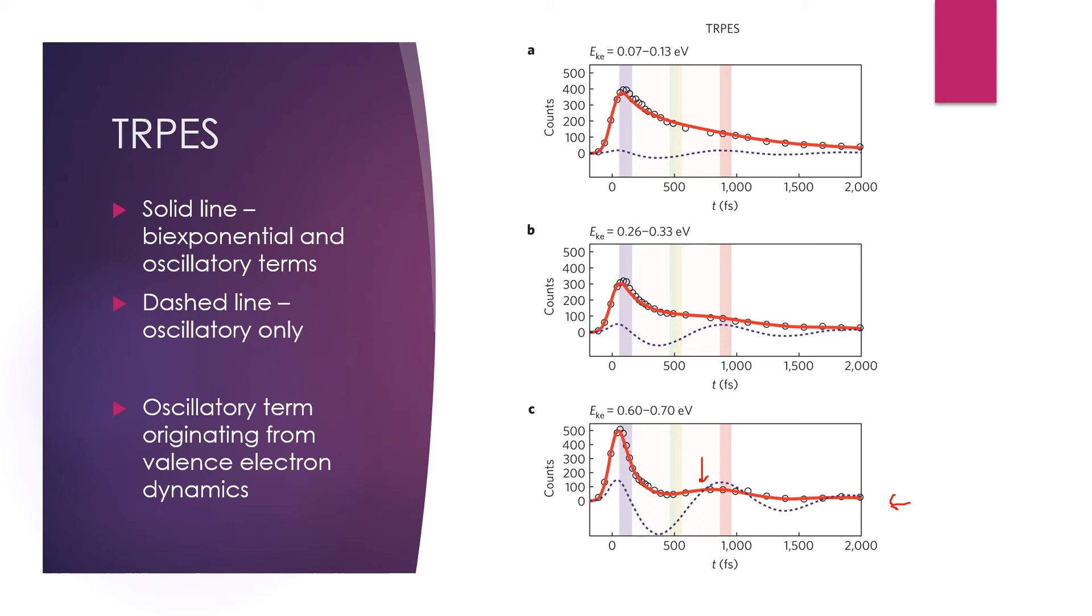At high photoelectron kinetic energies, meaning low cation internal energies, as seen here in region C, the cation is in its ground vibrational state, and the oscillation of the electron has a much stronger effect on the photoelectron spectra.